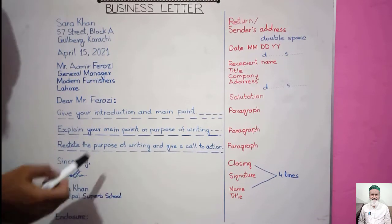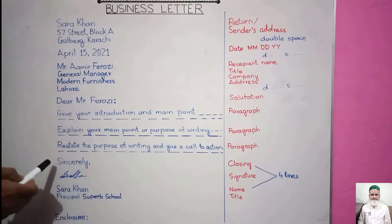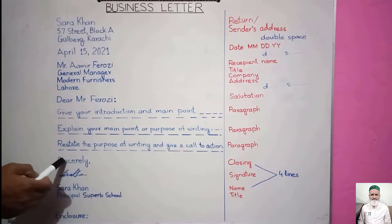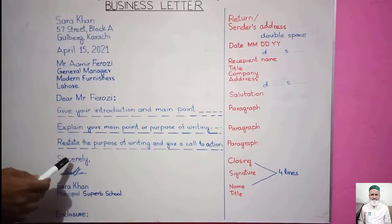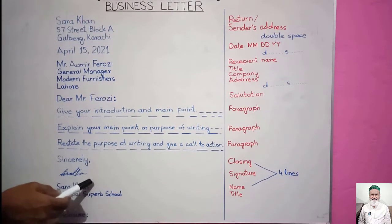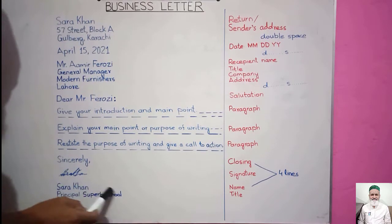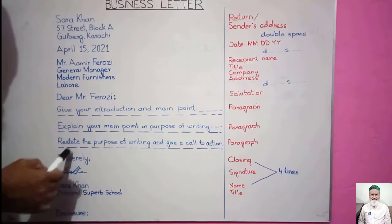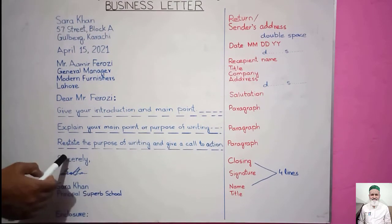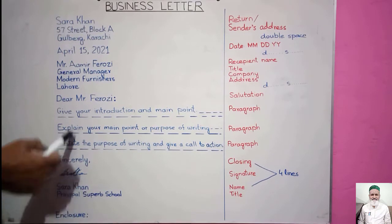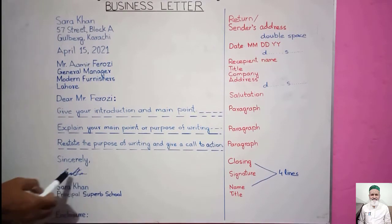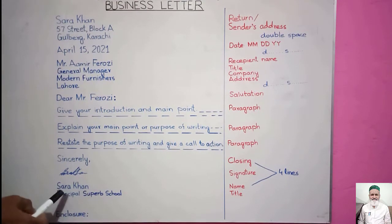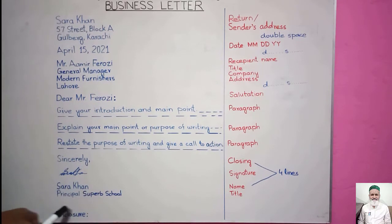After the third paragraph, the closing section begins. For the closing, 'Sincerely' is normally written. Sincerely is followed by a comma — make sure to add the comma after 'Sincerely.' After 'Sincerely,' leave four lines and then write the sender's name and title. The space left in between is for the signature. Just like the other sections, there is also double spacing between the parts of the closing — one line is left between each.